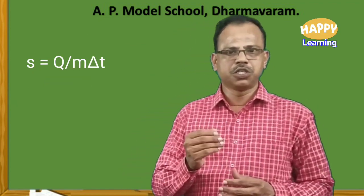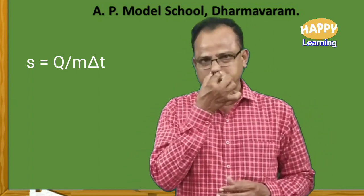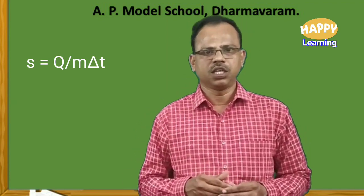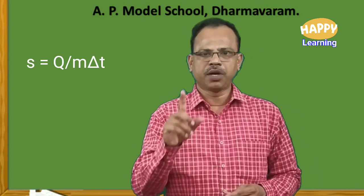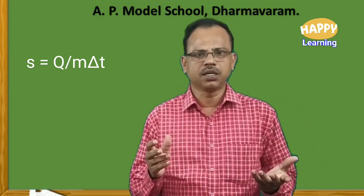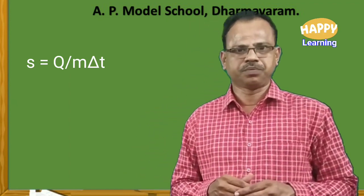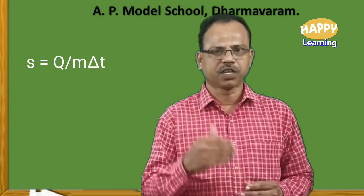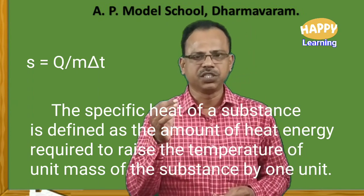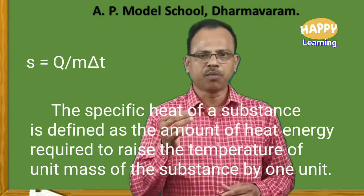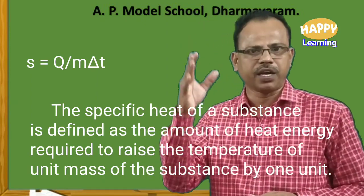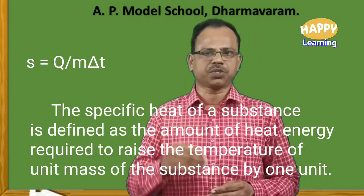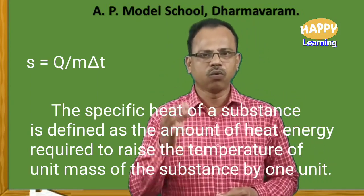Now let us define specific heat. From the formula s equal to q by m delta t, suppose if the denominator m equals 1 and the denominator delta t equals 1, then s and q will be equal. Based on this logic, the specific heat is defined as the amount of heat energy required to raise the temperature of unit mass of a substance by 1 unit.